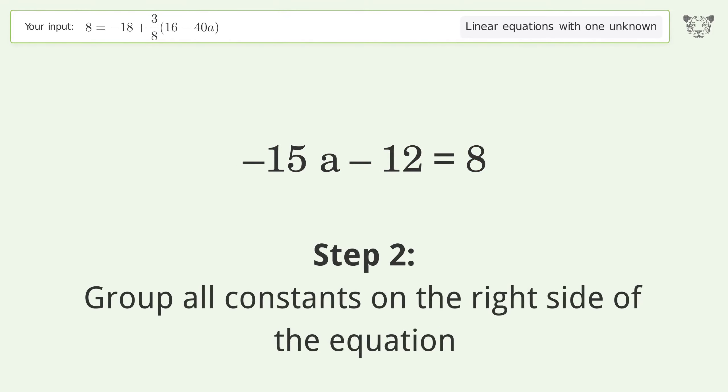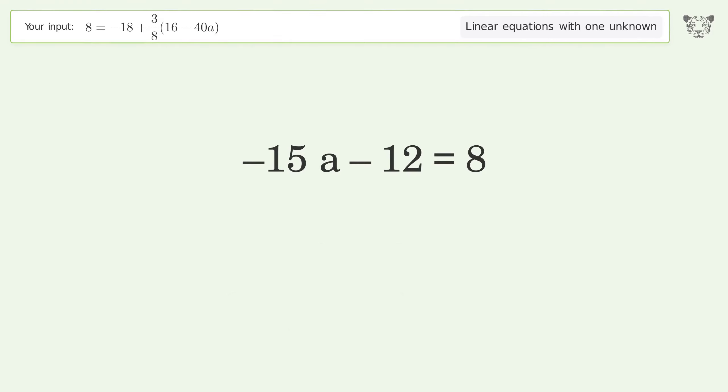Group all constants on the right side of the equation. Add 12 to both sides. Simplify the arithmetic.